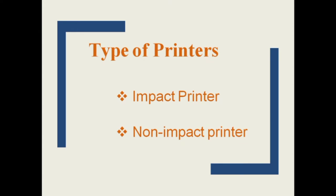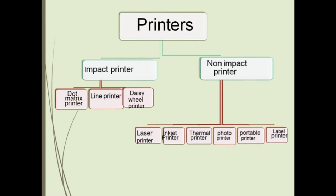The classification of printers can be done in two parts: number one, the impact printer, and number two, the non-impact printer. The impact printer can further be categorized into three parts: dot matrix printer, line printer, and daisy wheel printer. Non-impact printers can further be classified as laser printer, inkjet printer, thermal printer, photo printer, portable printer, and label printer.